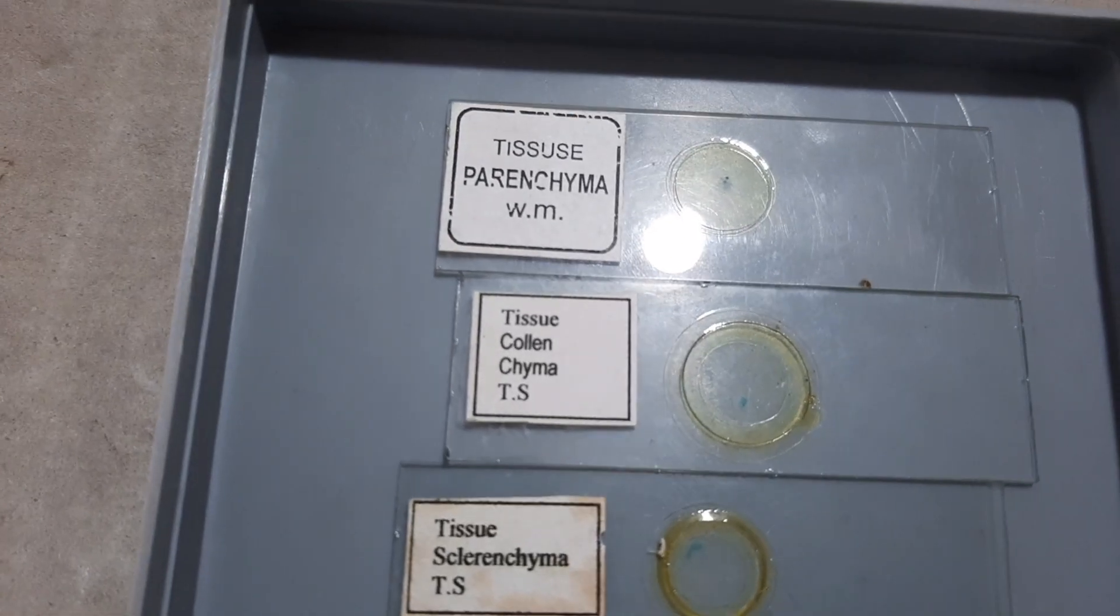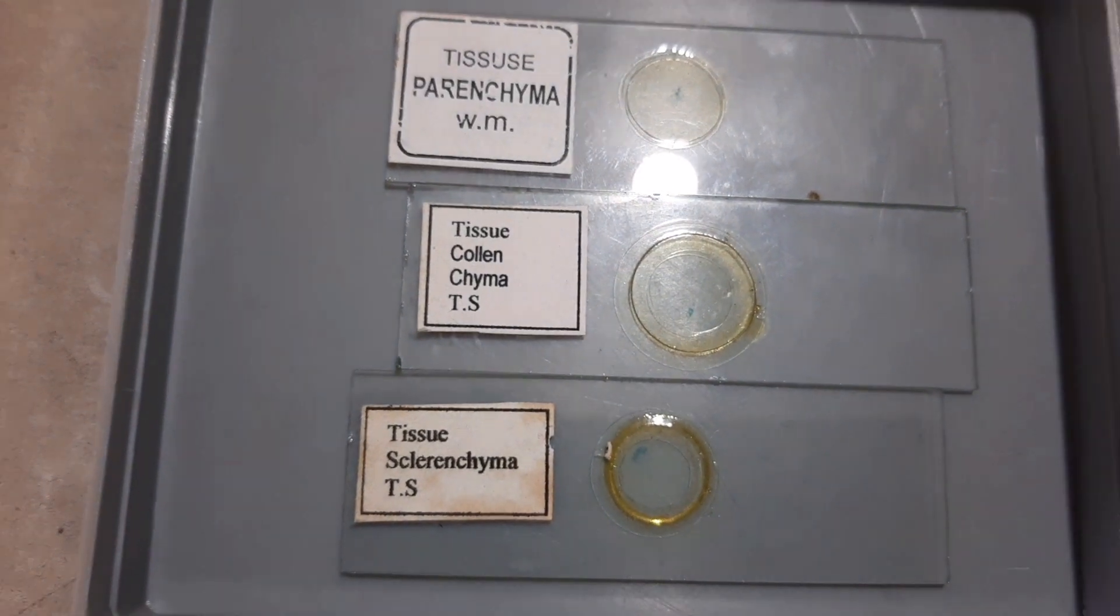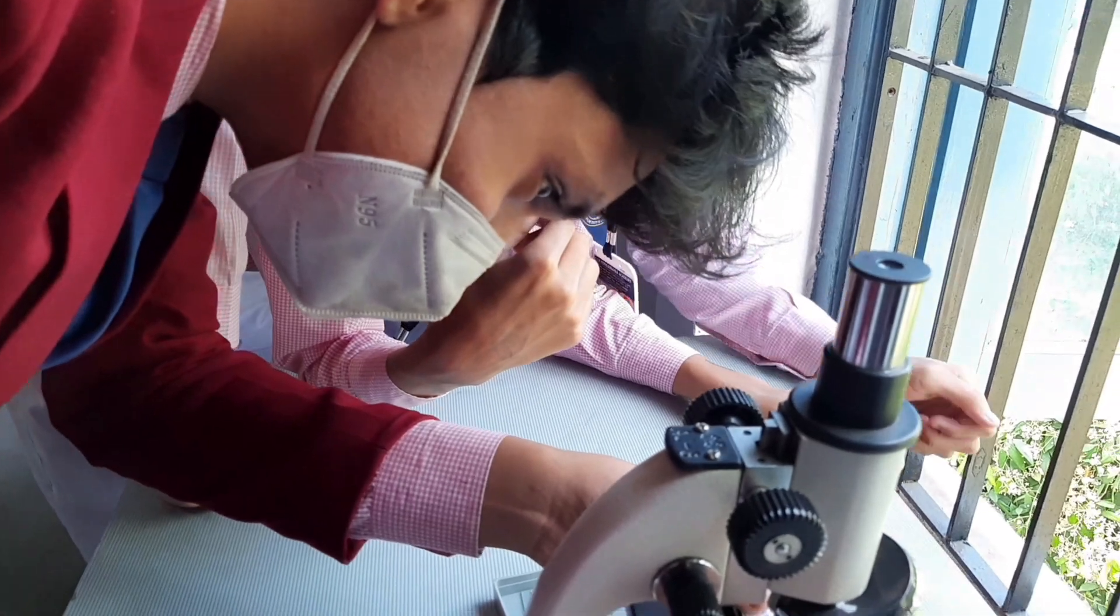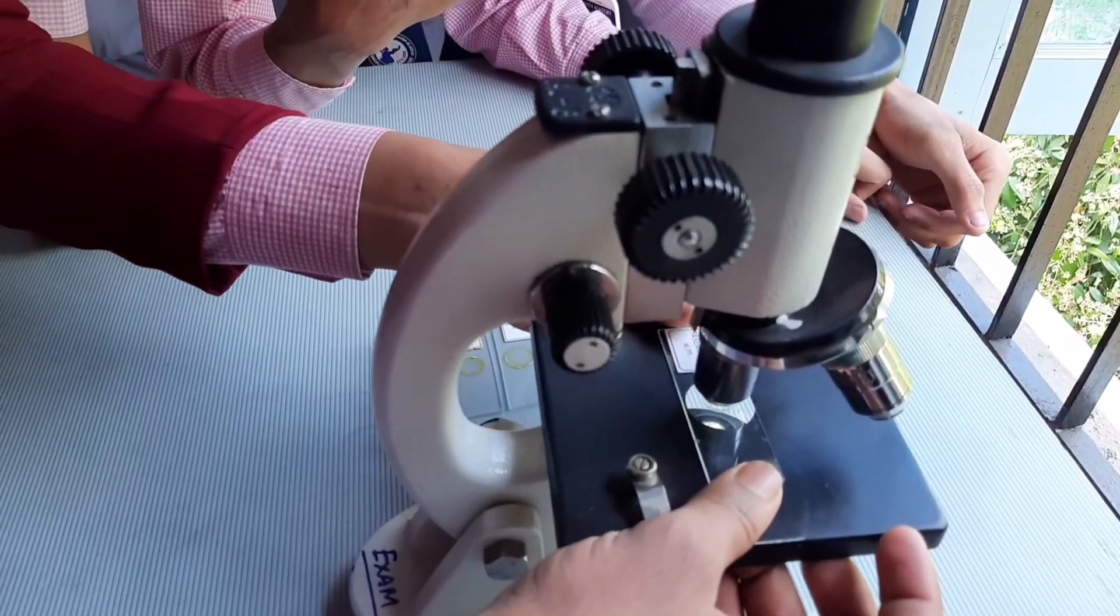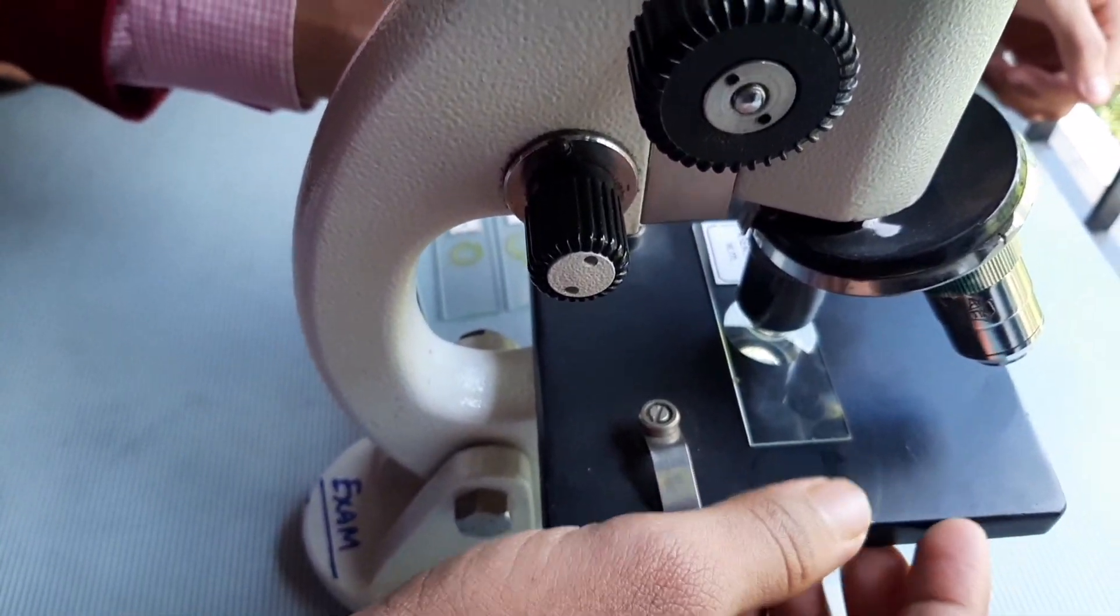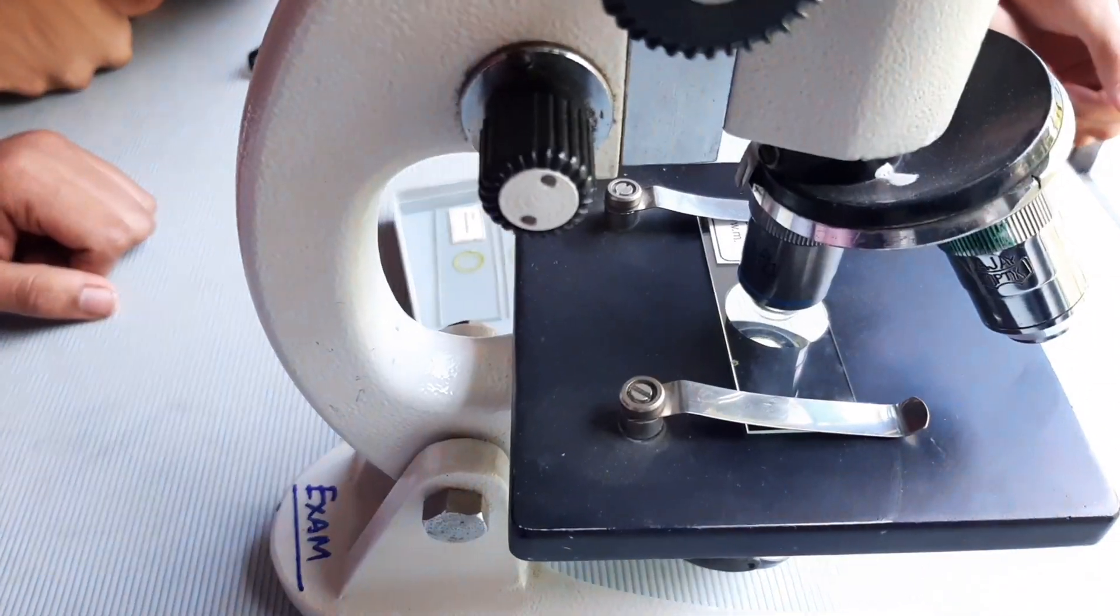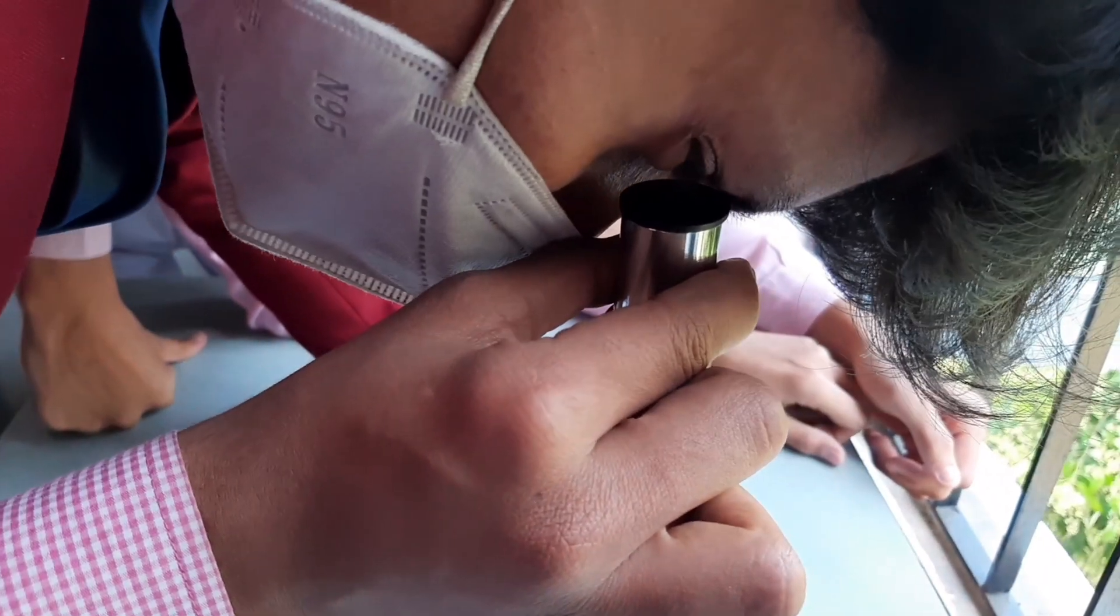you have to draw labeled diagrams and write down comments for the characteristics that you have seen. You can see here my student is fixing the slide on the stage of the microscope, and then he will view it and note down the features.